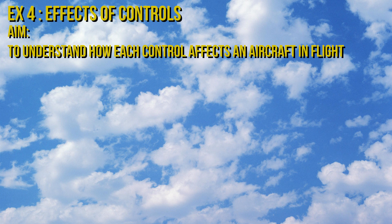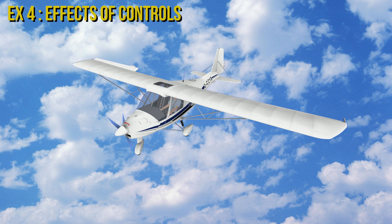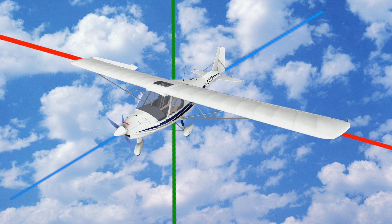The first thing we need to look into is that we will be flying a three-axis aircraft. This means we can rotate in three different directions or around three different axes. The axes we will be looking at are the longitudinal axis, which the aircraft rolls around.